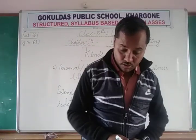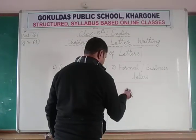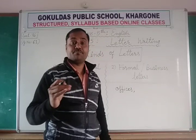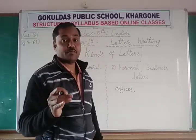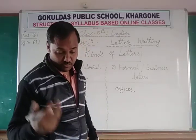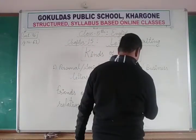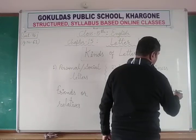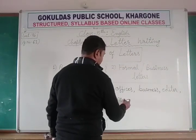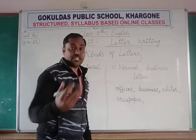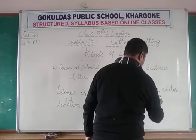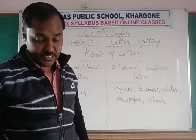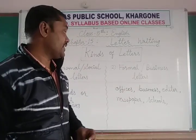Informal letters are written to friends or relatives. Formal letters are written to government or private offices — like the collector, superintendent of police, town inspector, business offices, or the editor of a newspaper. Letters to your schools, colleges, coachings, class teacher or principal, dealers, and traders are also called formal letters or business letters. This is the difference between these two types of letters.